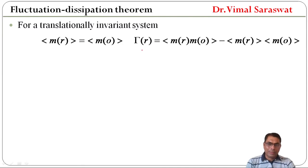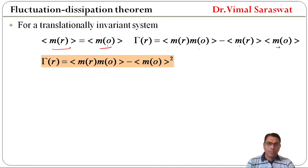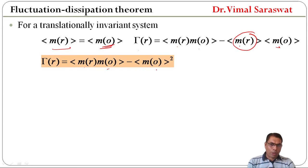And Γ(r) = ⟨M(r)·M(0)⟩ minus ⟨M(r)⟩·⟨M(0)⟩. If the ensemble average of M(0) is zero, then the second term vanishes and we get the simplified correlation function.